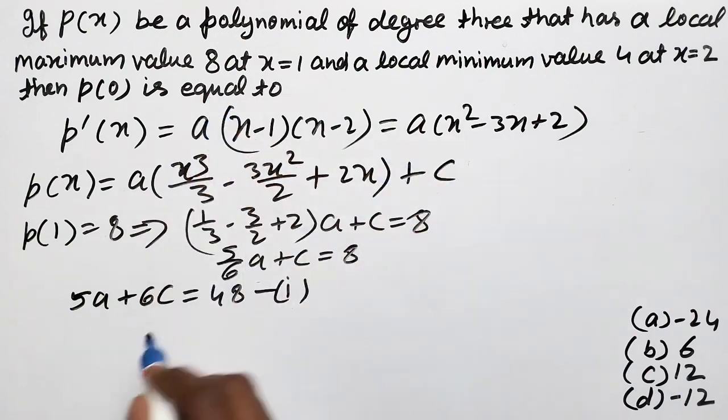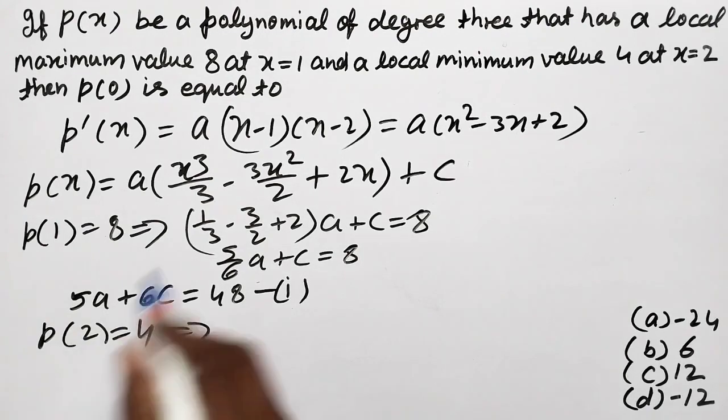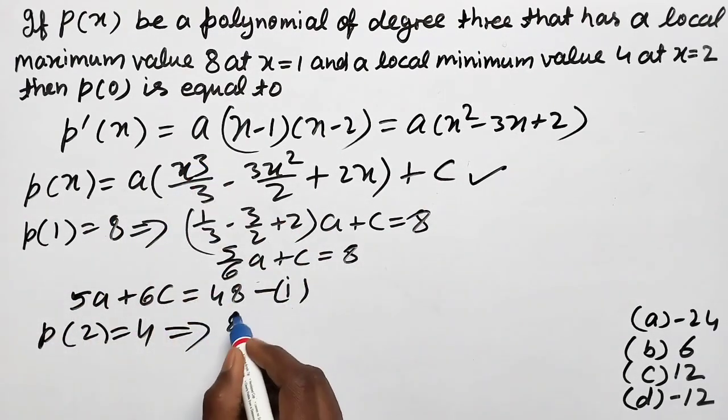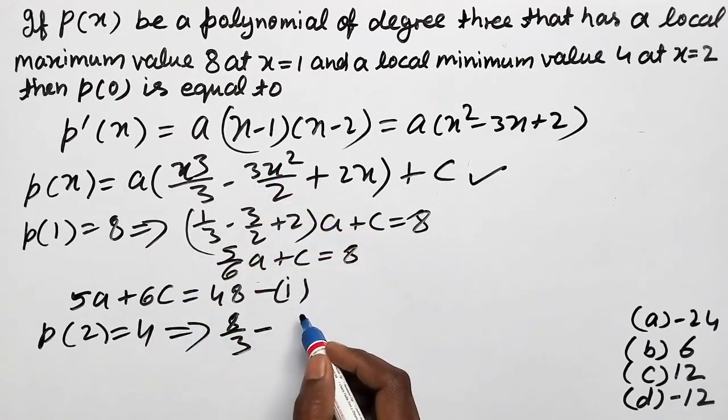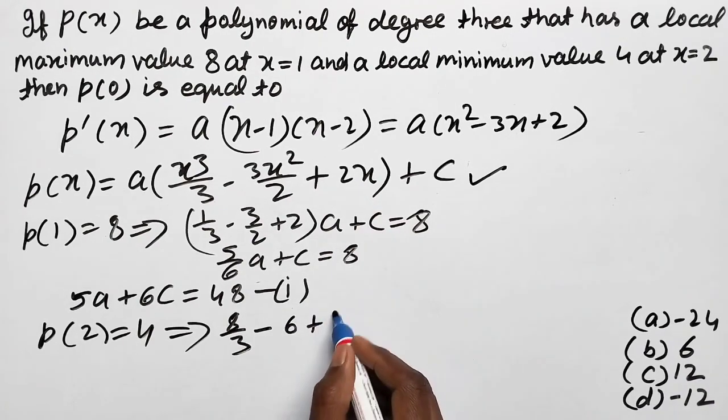And at 2 it's minimum, means P(2) equal 4, the minimum. We'll substitute 2 in this polynomial, so A(8/3 minus 2² times 3/2, means 6, plus 2 times 2, 4).